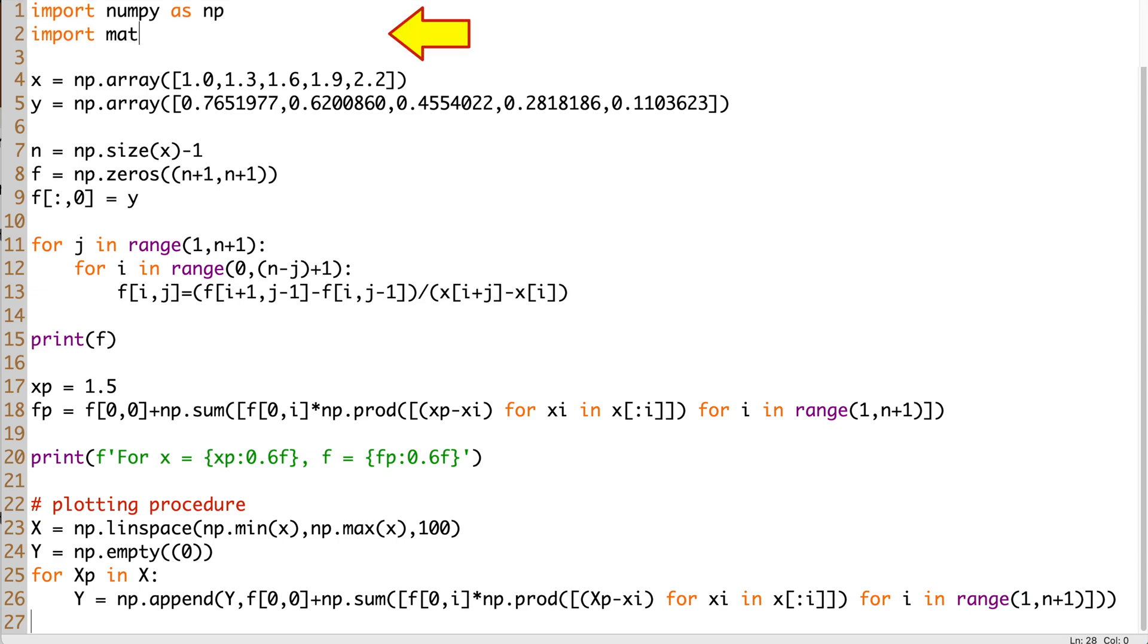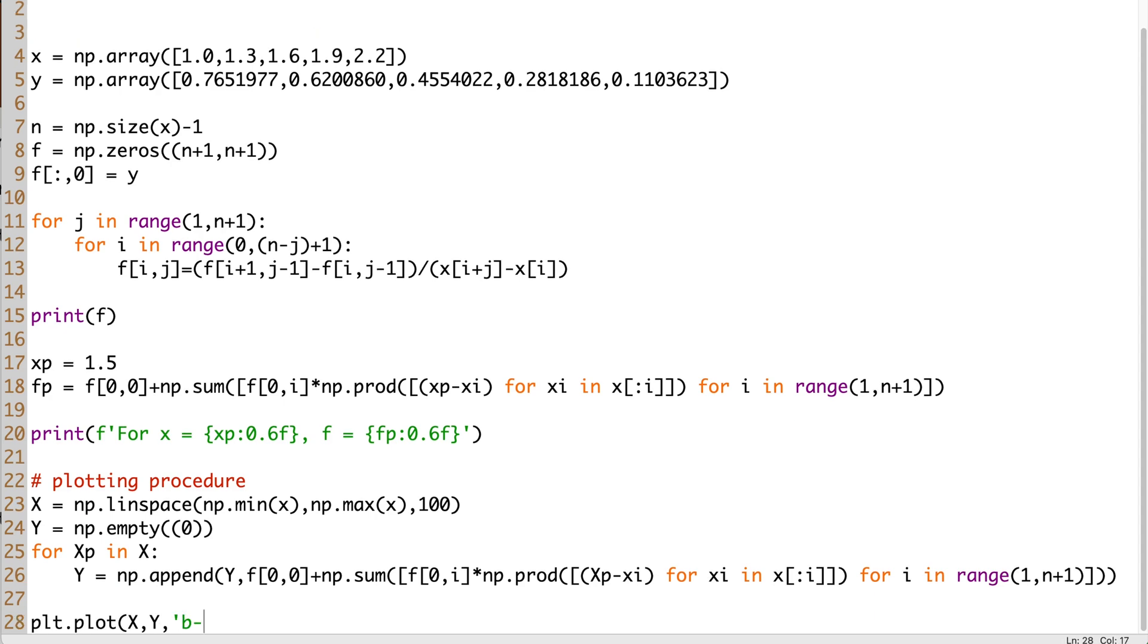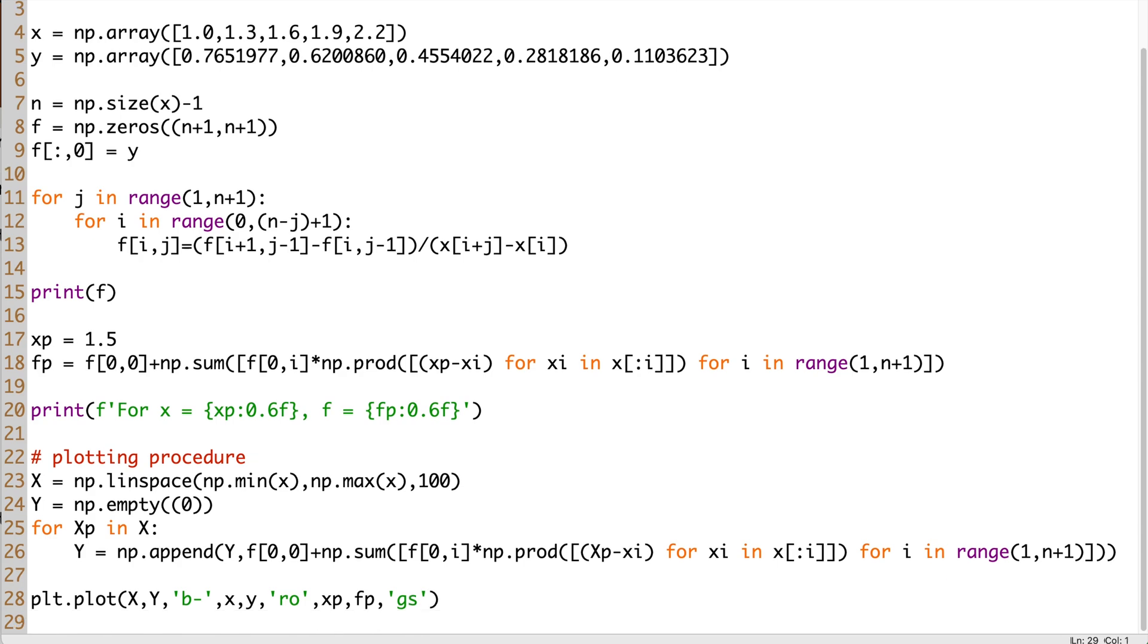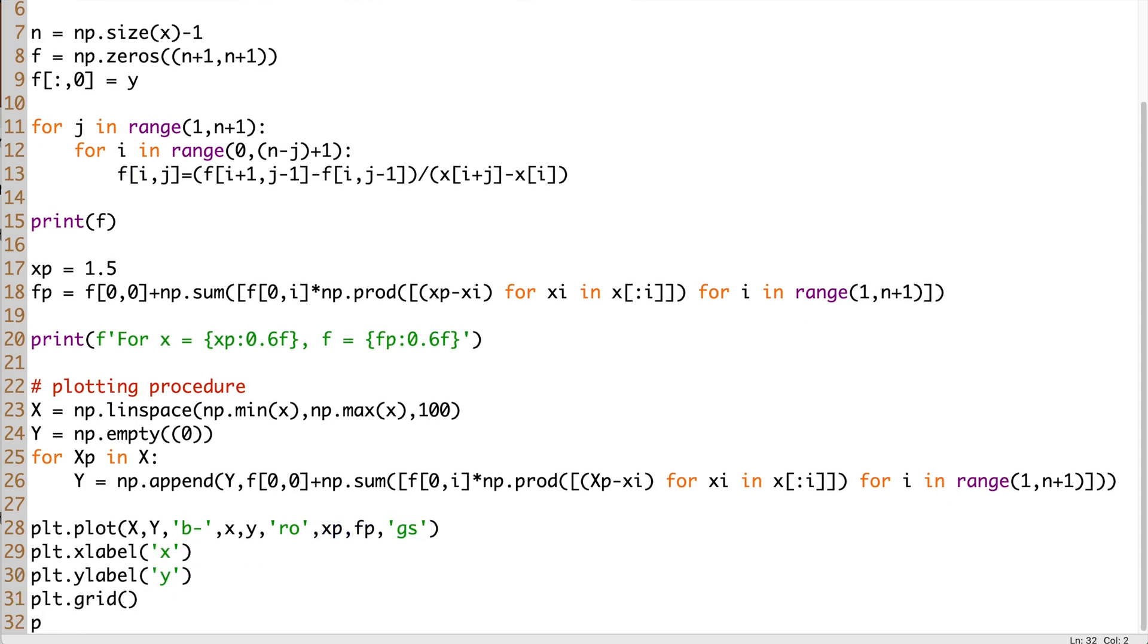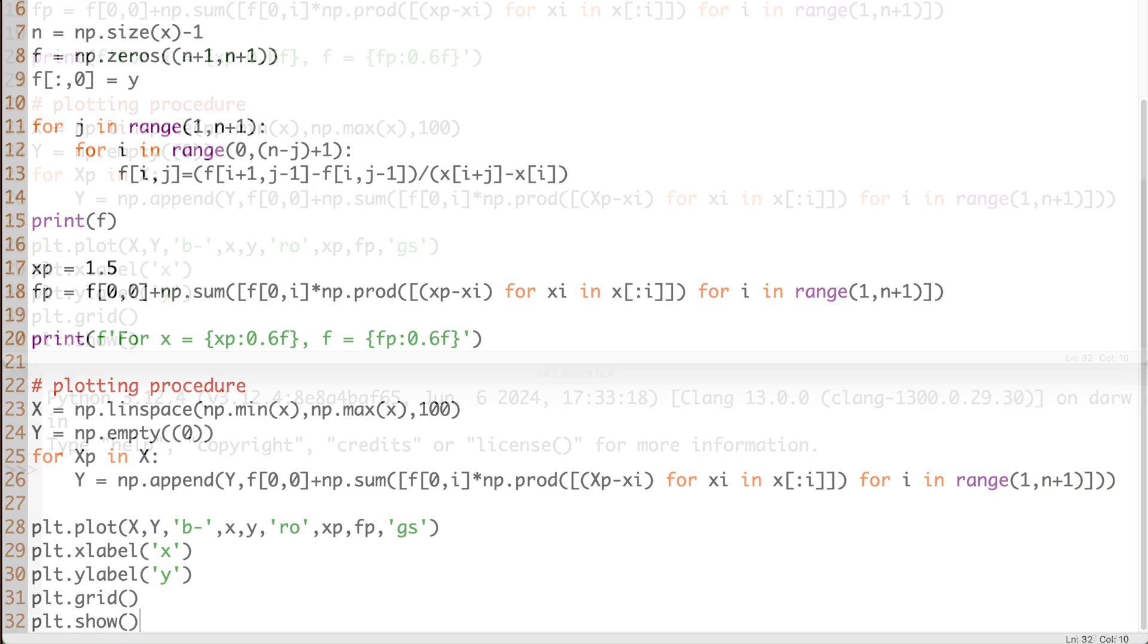First, we go back to the top of the code and import the pyplot module from matplotlib. We can plot all points using a single plot function. So, the polynomial curve will be a blue continuous line, the data points of x and y, red circles, and the interpolated point will be shown as a green square. Before plotting, let's also add the x and y labels and display the grid.